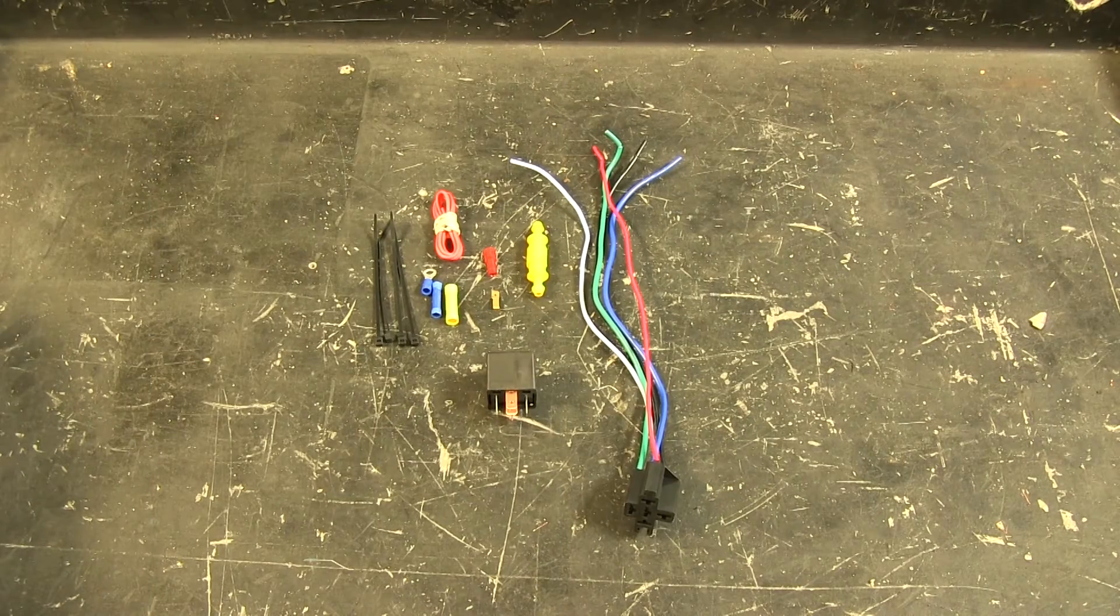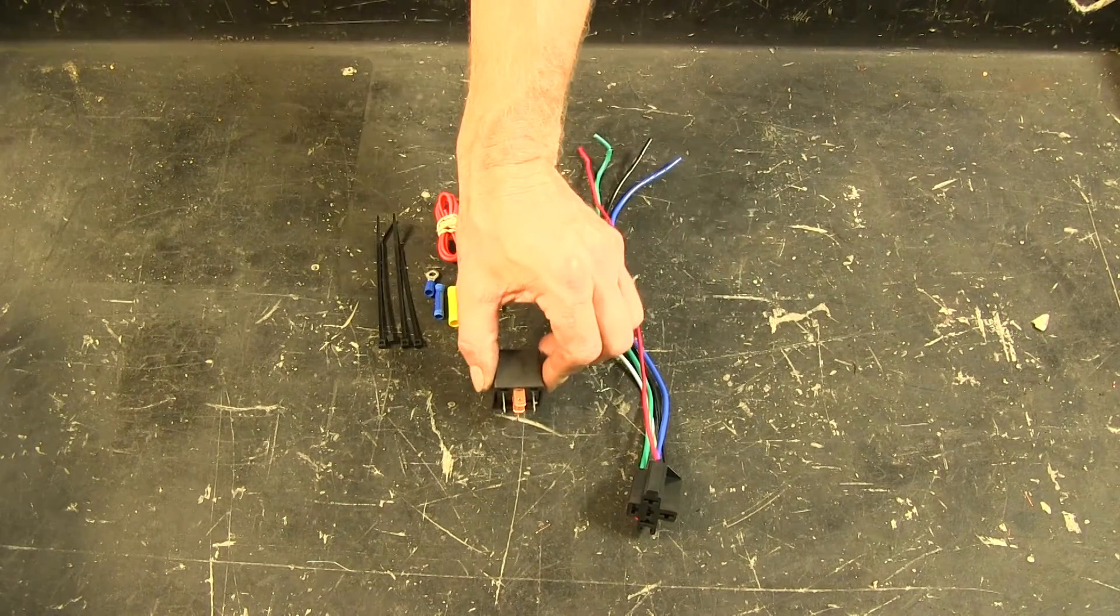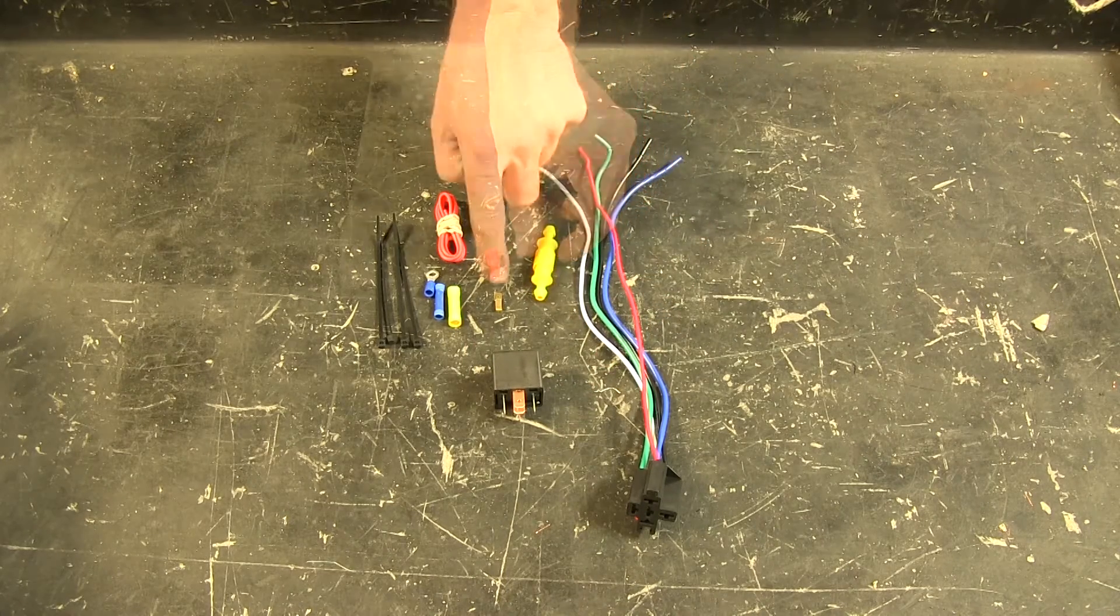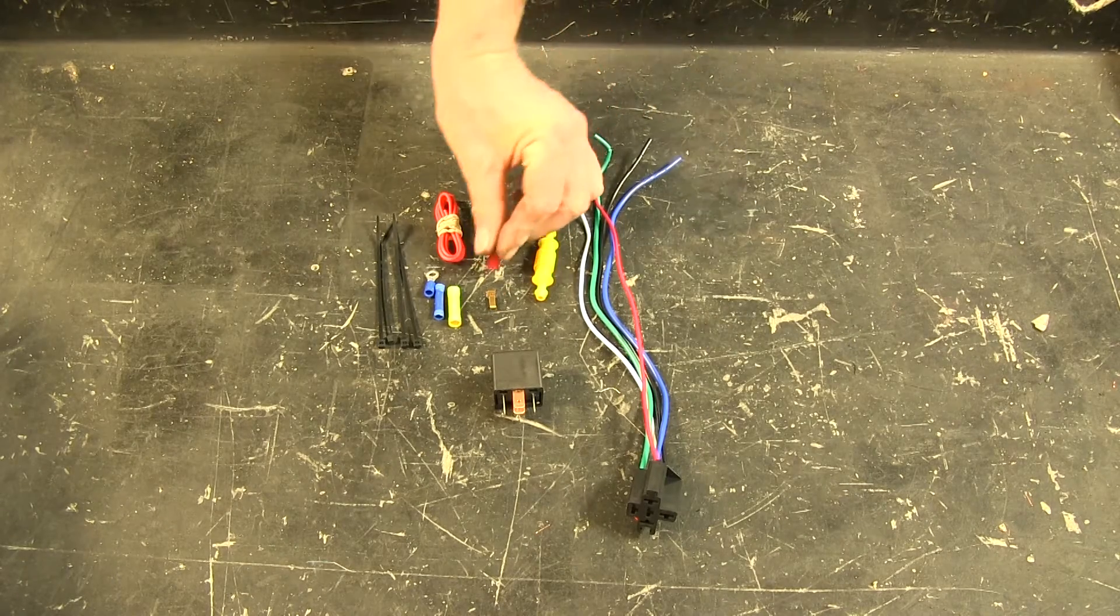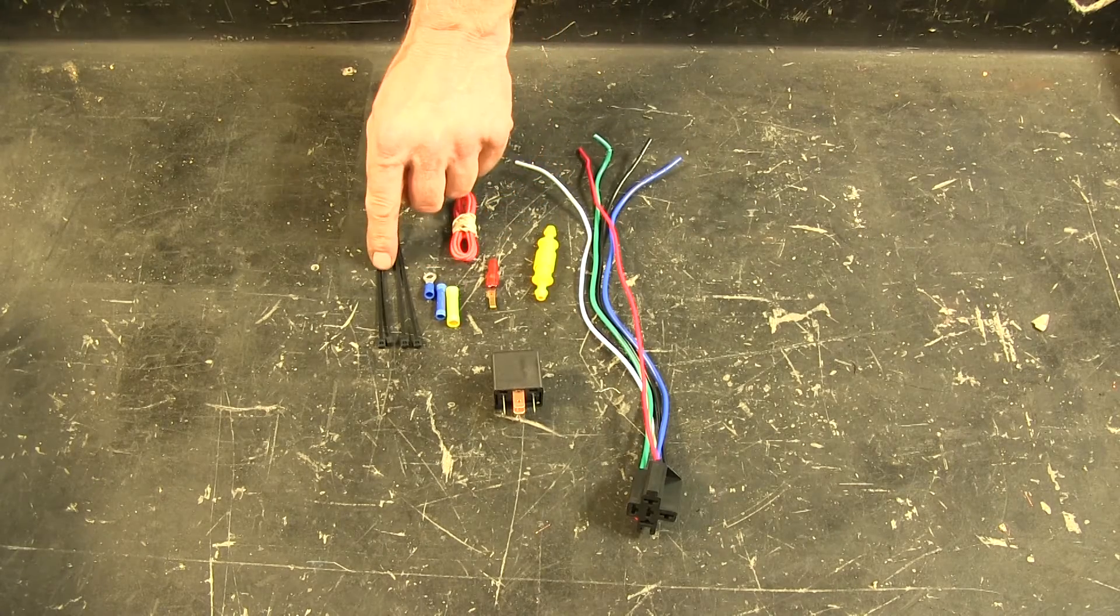We'll go ahead and show you what components come with this kit. First off, we've got the wire harness here, the relay, a fuse holder with the fuse already installed, this little brass piece is a fuse tap, and terminal will slide into it, and the butt connectors, the ring terminal for ground, and some zip ties.